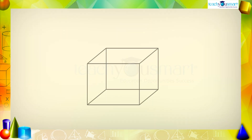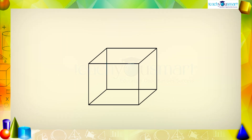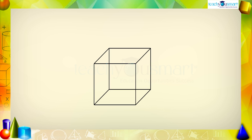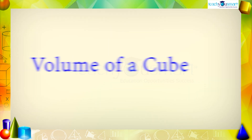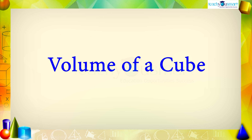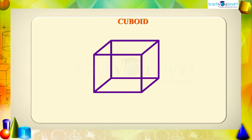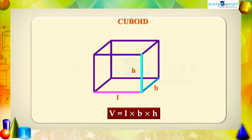We know that a cube is a cuboid with all edges equal. We have to find the volume of a cube. We know that the volume of a cuboid of length l, breadth b, and height h is l multiplied by b multiplied by h.